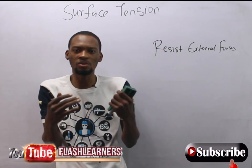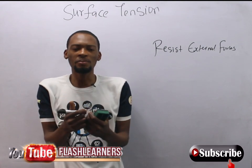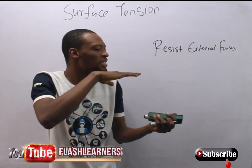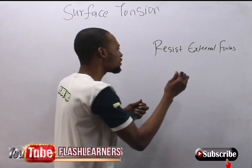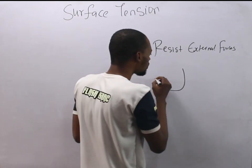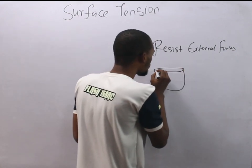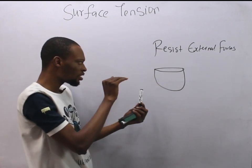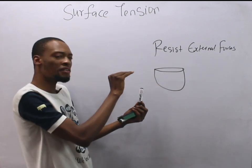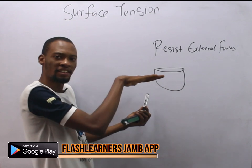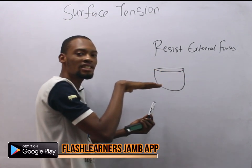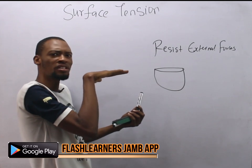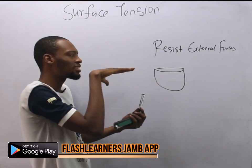So the force of attraction holding water molecules together sometimes creates a surface tension, making it behave as if it is covered. When you look at still water or liquid, it behaves as if it is covered by an elastic skin. That phenomenon refers to surface tension.